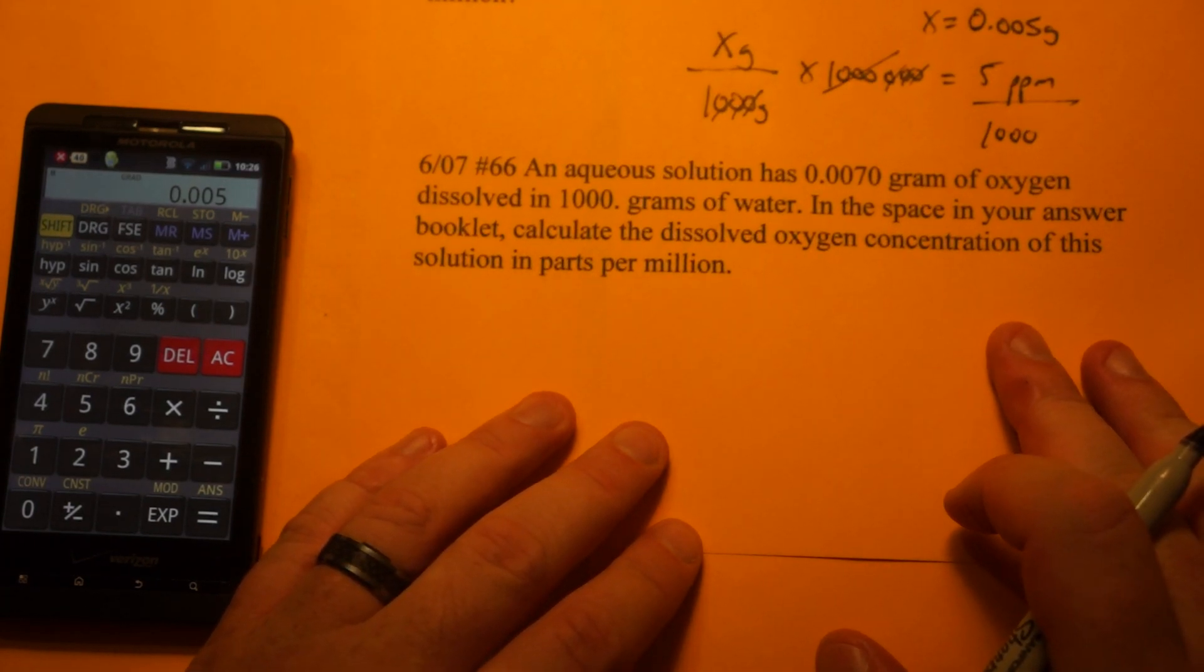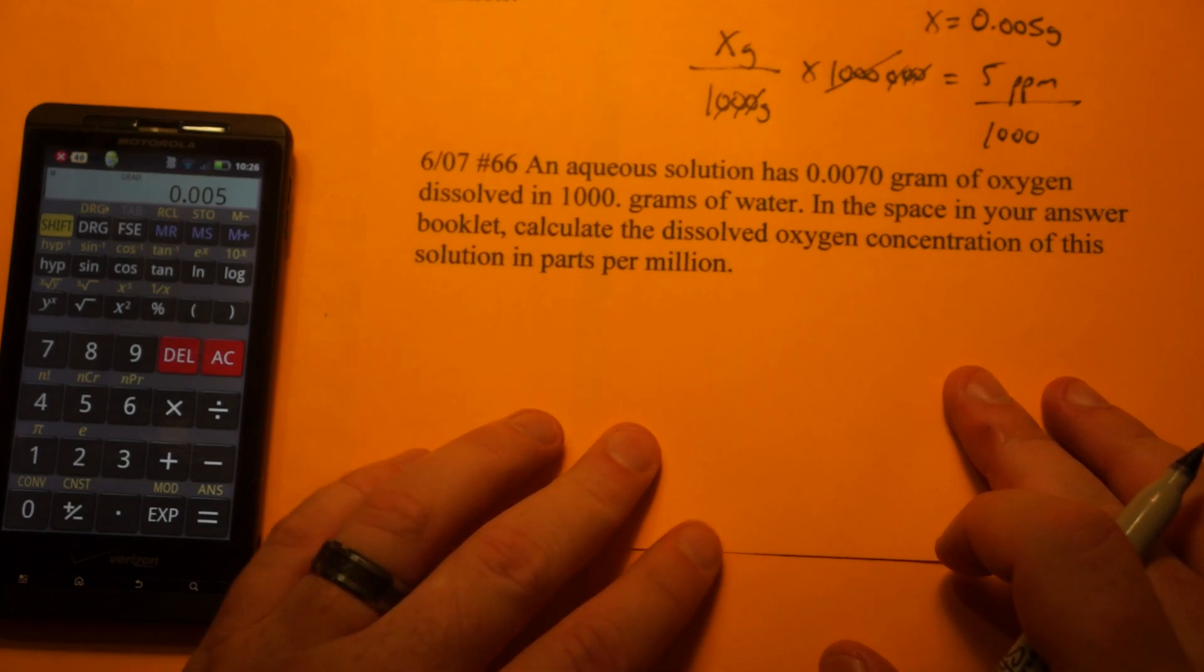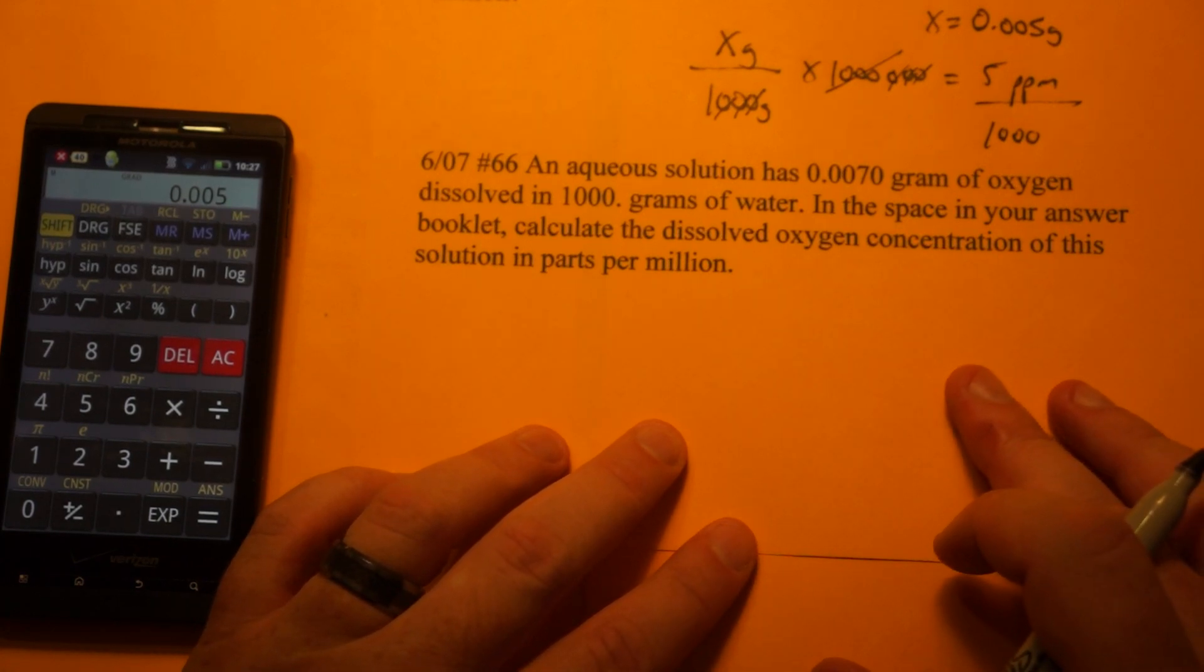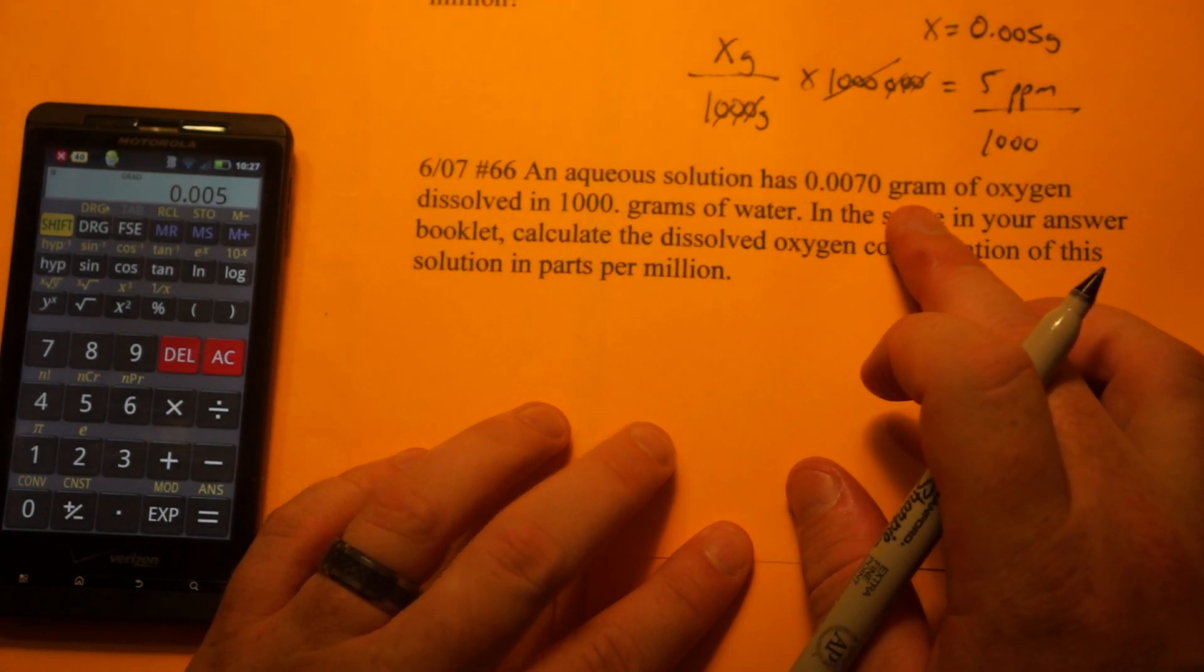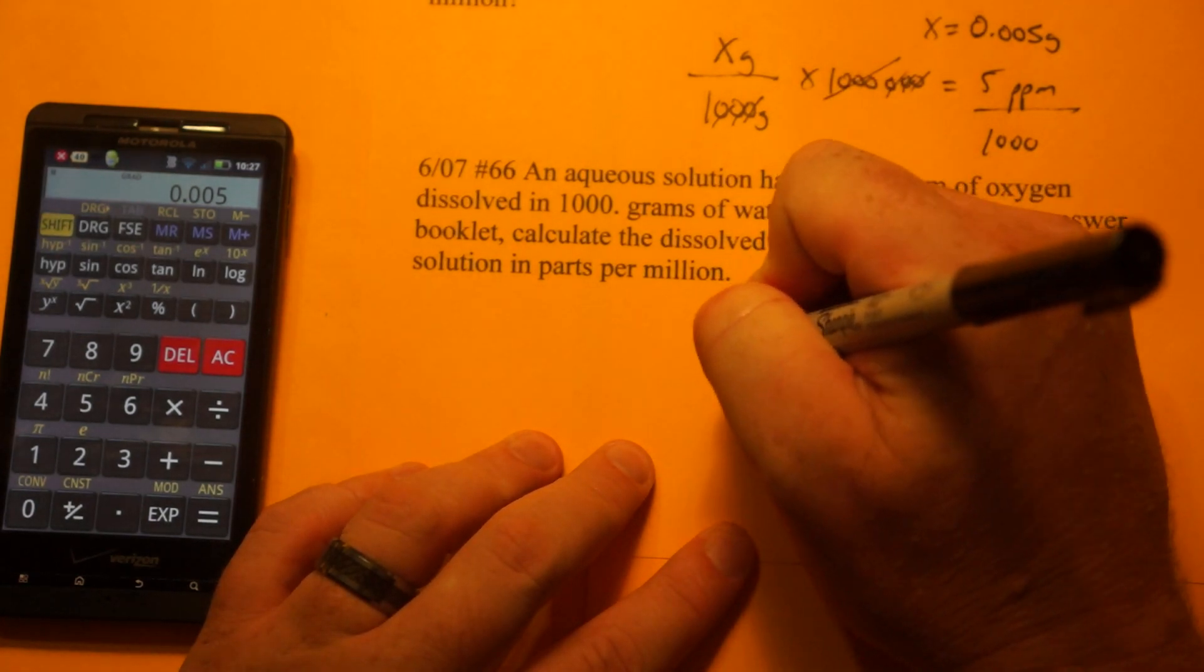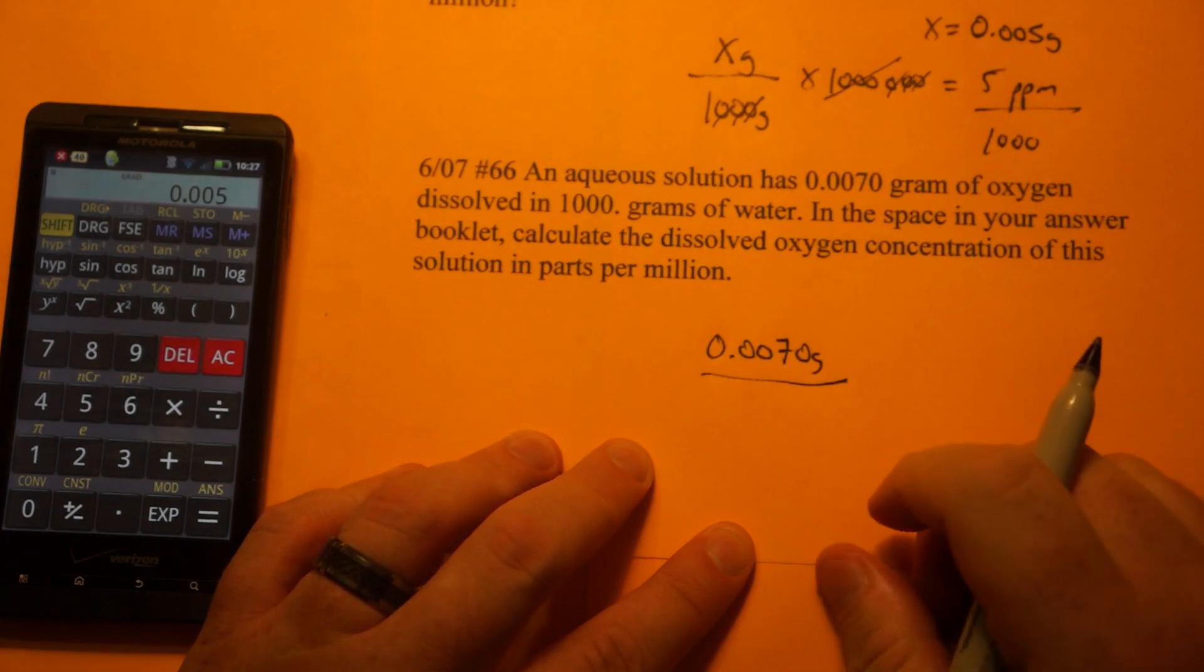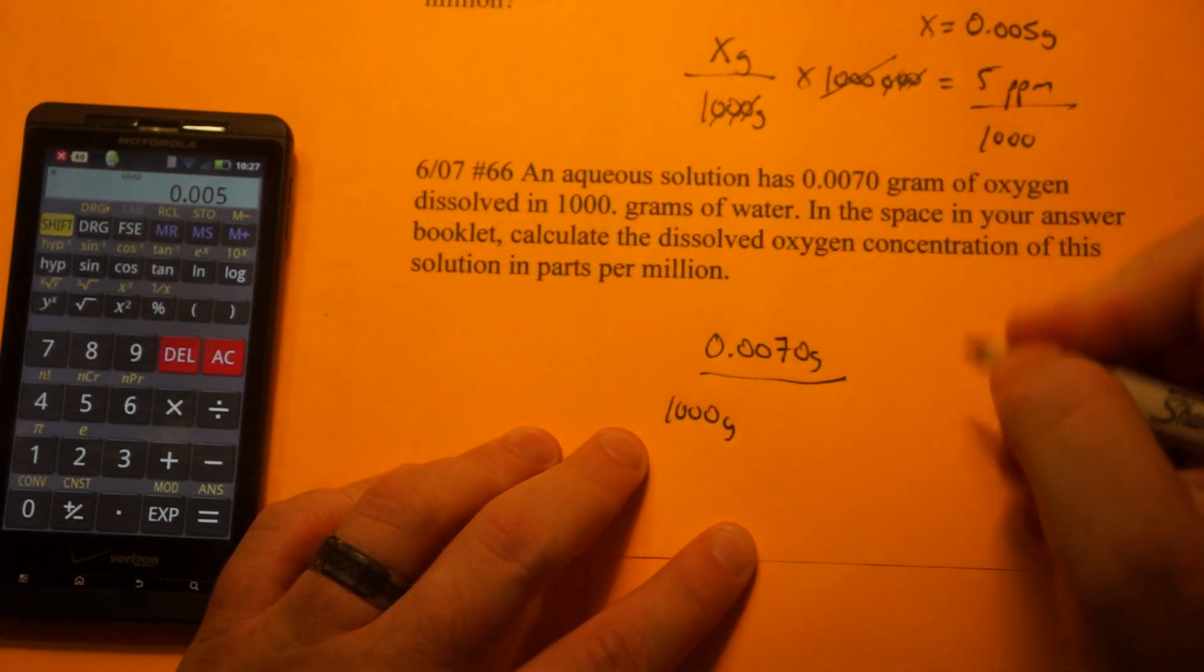And the last one I'm going to go over is a June 2007 PPM question that was really nasty because it was a two-point question, one point for the setup and one point for the answer. Most students got the answer part, but the setup was just really nasty. We'll just go through it. An aqueous solution has 0.0070 grams of oxygen dissolved in 1,000 grams of water.